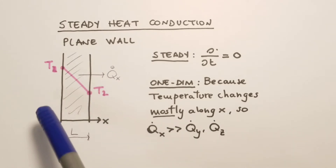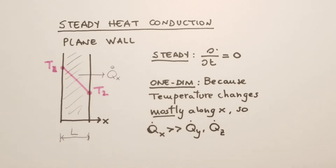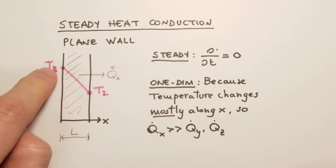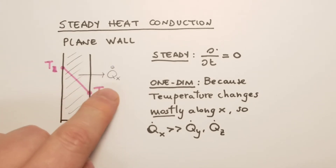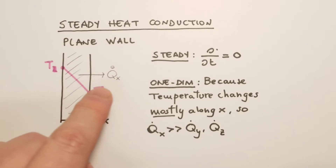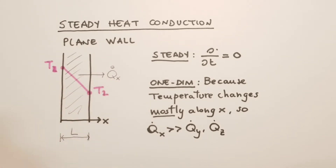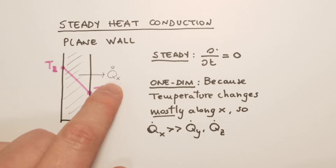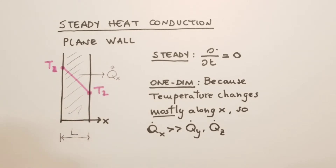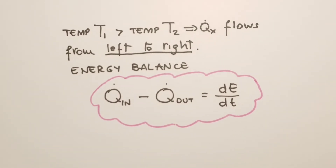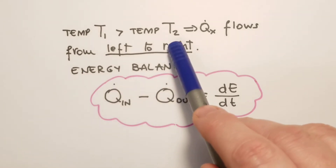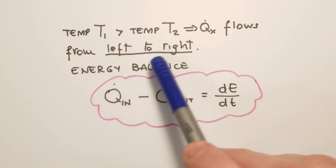The temperature varies linearly in the wall, decreasing from T1 to T2, and the heat transfer occurs from left to right. We call this Qx, which is the component of the heat transfer vector along the x direction. Since T1 is larger than T2, Qx flows from left to right.